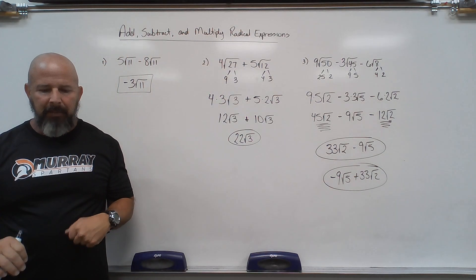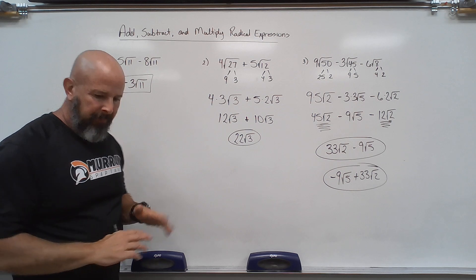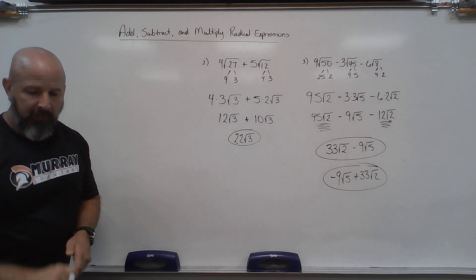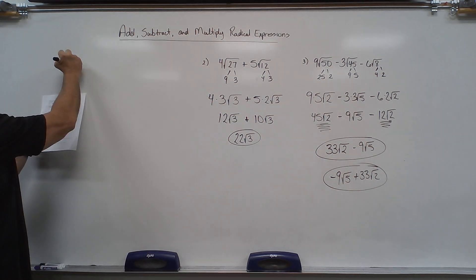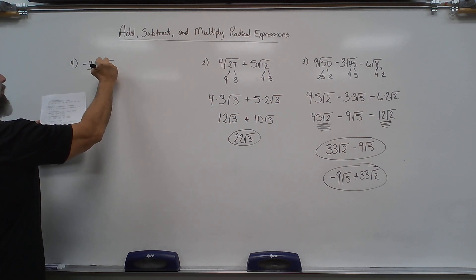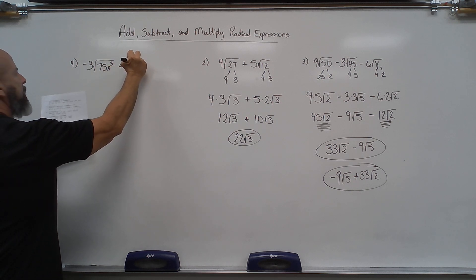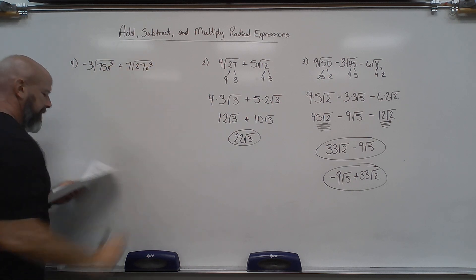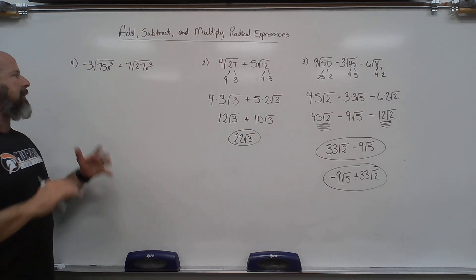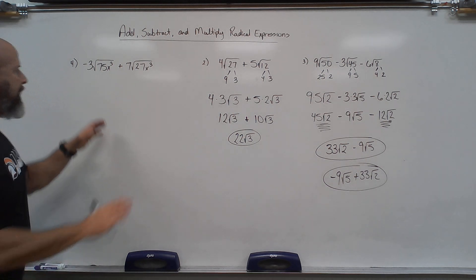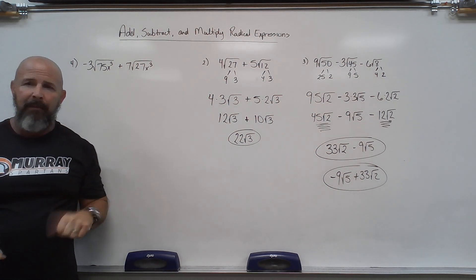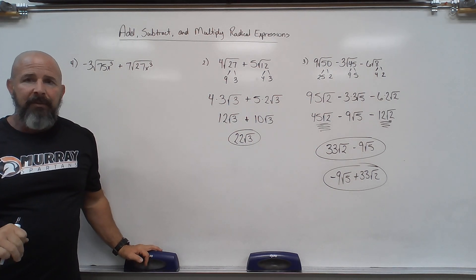Now let's bring in another example for adding and subtracting with variables. We have negative 3 root(75x³) plus 7 root(27x³). It doesn't matter if there are variables — I can still quickly tell if they're like or not. These are definitely not like: 27 and 75 are not the same value, so I don't have like radicals and I still need to go through the simplifying process.